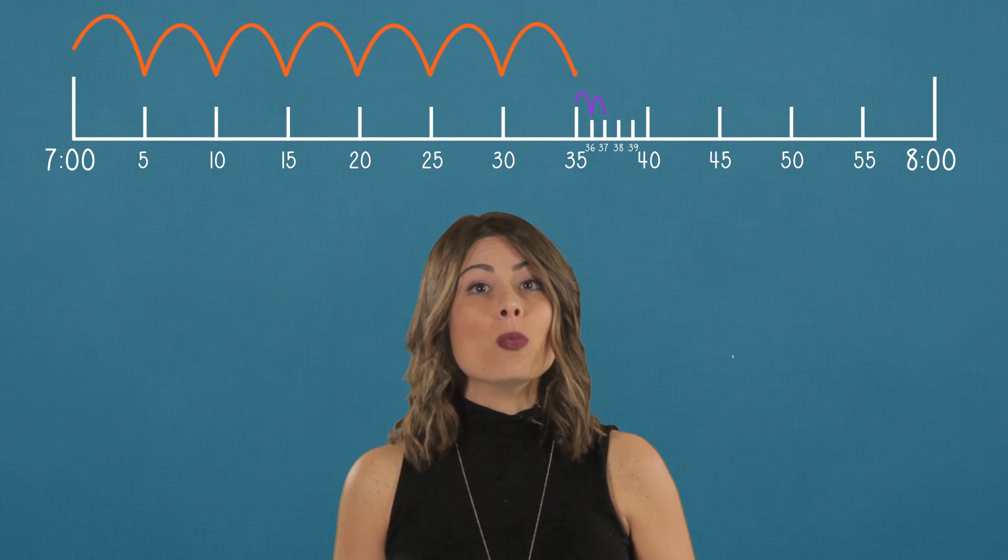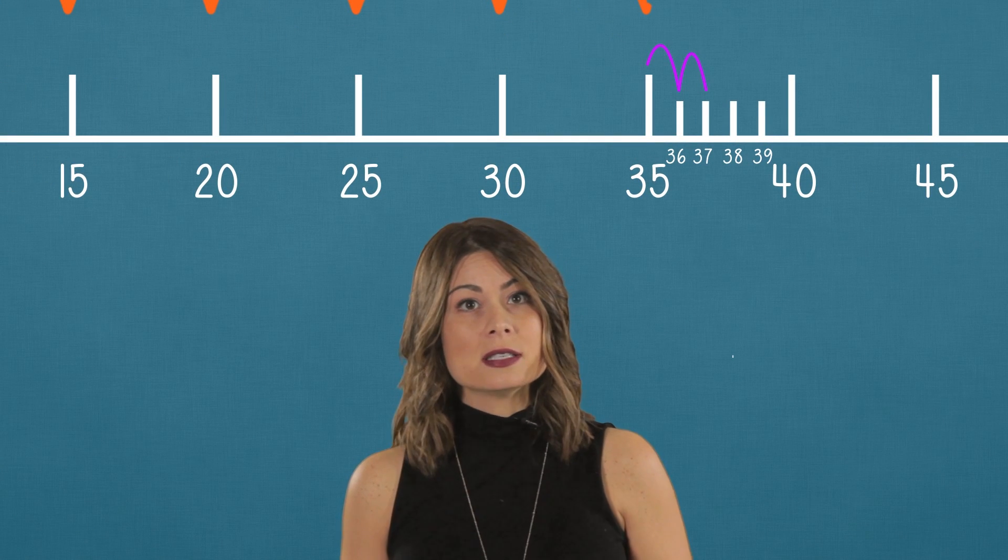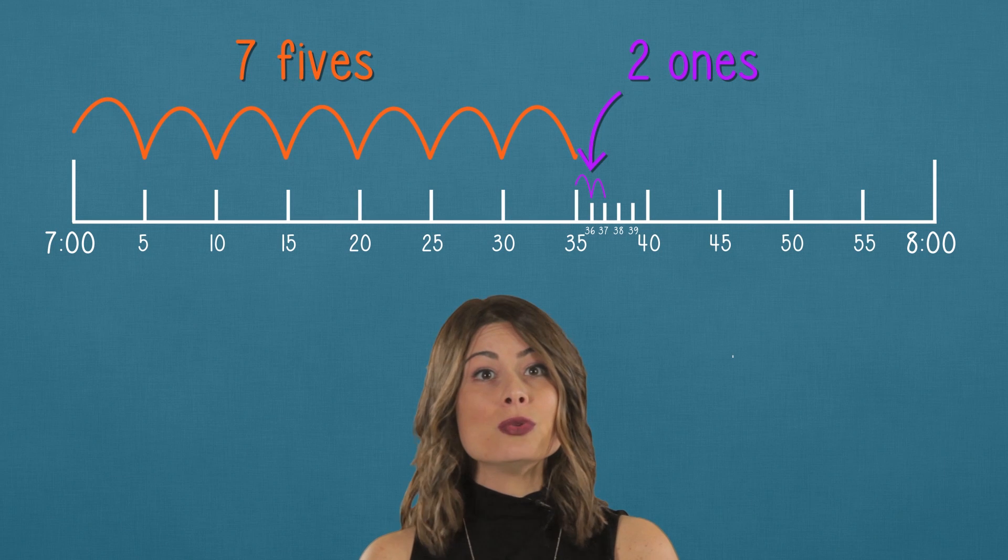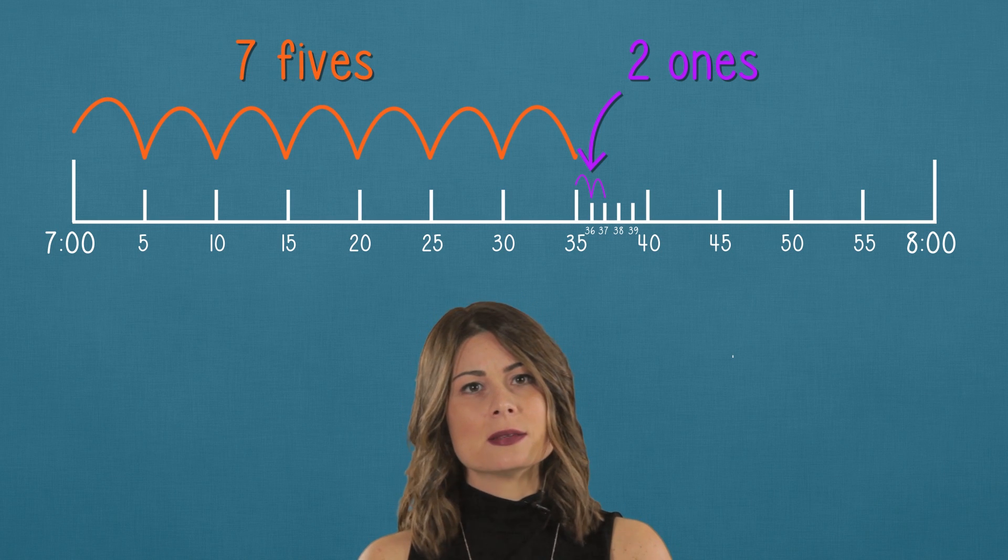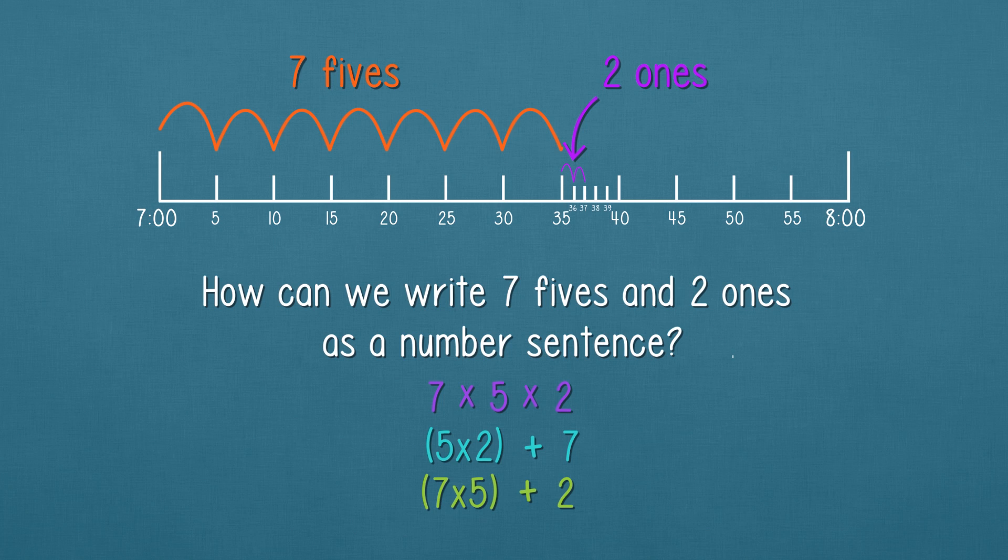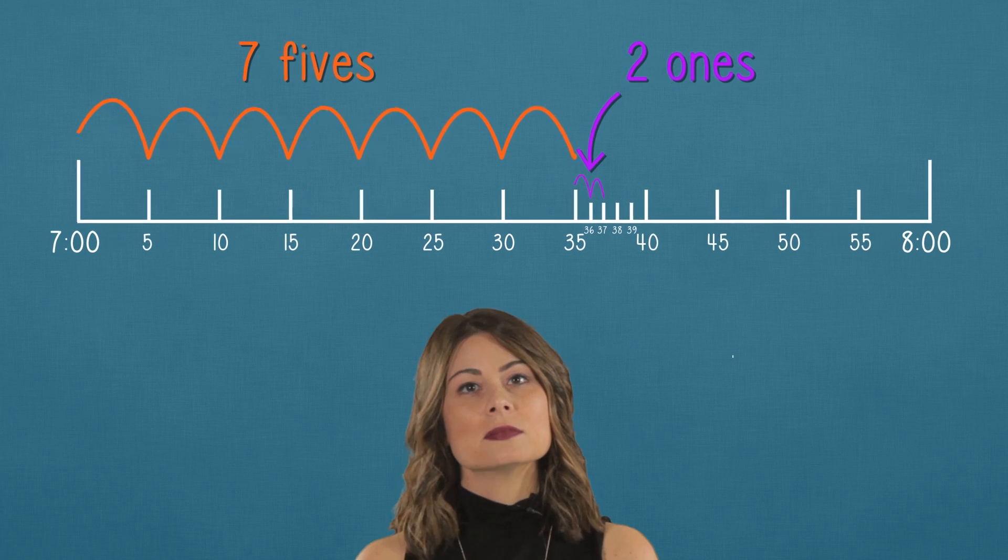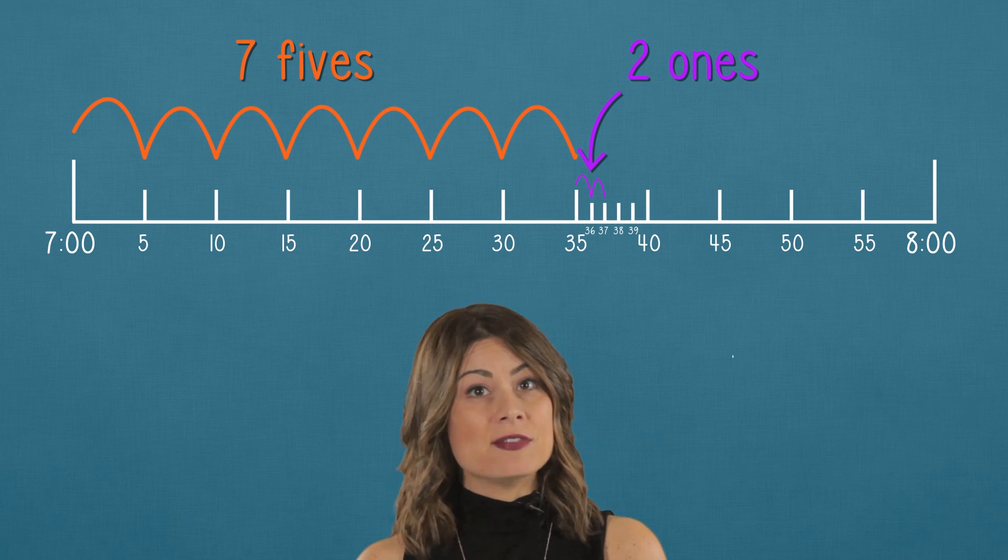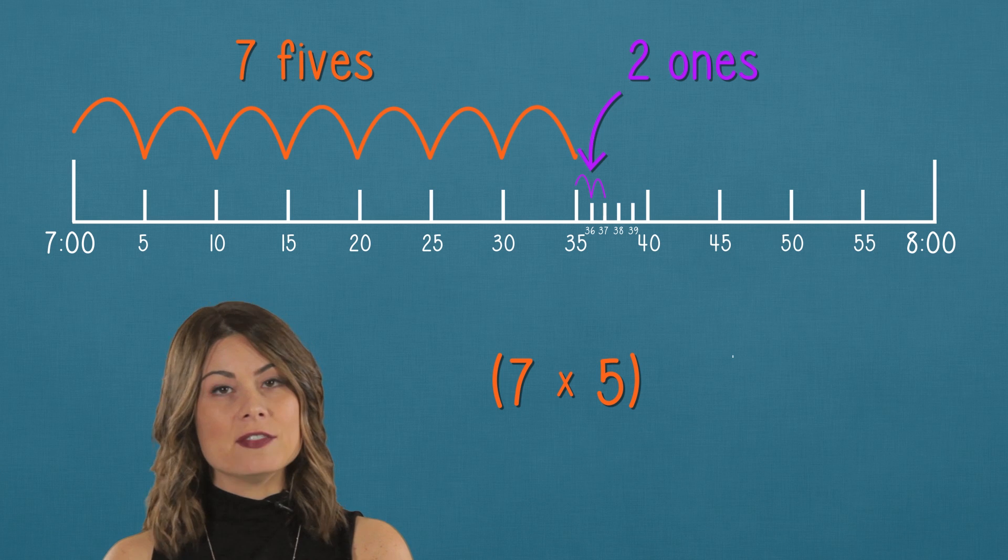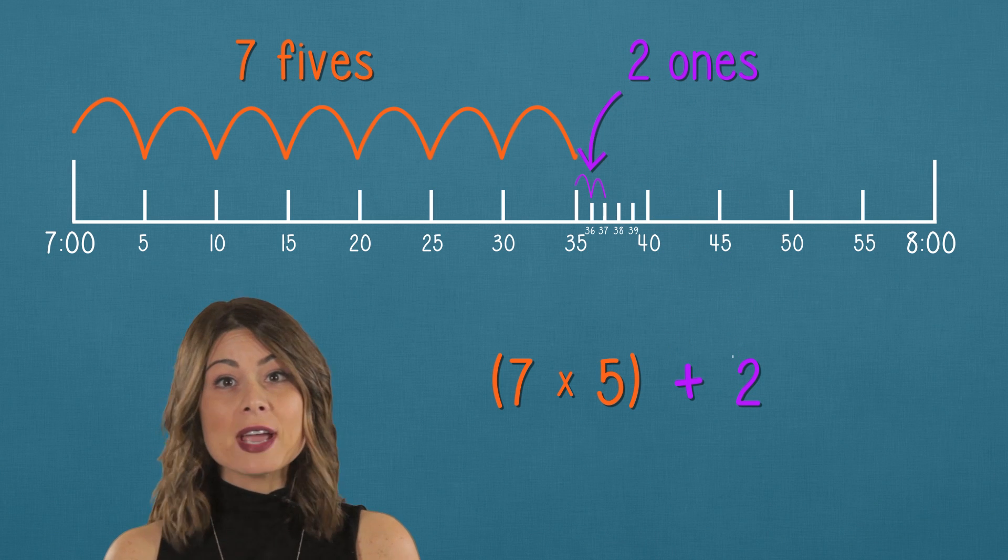We counted one, two, three, four, five, six, seven fives. And one, two ones. Seven fives and two ones. How can we write that as a number sentence? We counted by five seven times and added two. So that's seven times five in parentheses plus two. That's great.